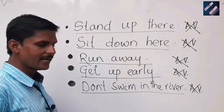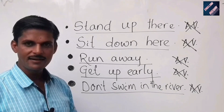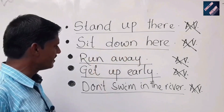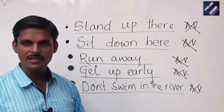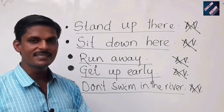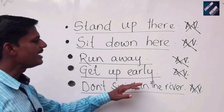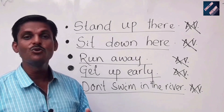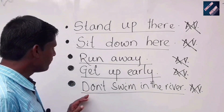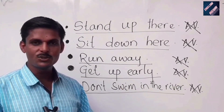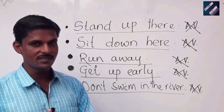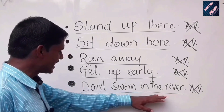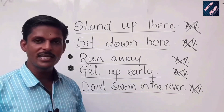'Sit down here' — no object, so not active voice. 'Run away' — no 'what,' 'who,' or 'whom' question, so not active voice. 'Get up early' — not in active voice because there is no object. 'Don't swim in the river' — not active voice because there is no object in the sentence, no such questions can be formed, and the verb is not a transitive verb.